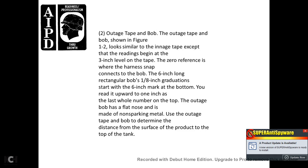11. Outage tape and bob. The outage tape and bob, shown in Figure 1-2, looks similar to the ingage tape except readings begin at three inches on the tape. Zero reference is where the harness snap connects to the bottom of the six-inch-long rectangular bob, with one-eighth-inch graduations starting at the six-inch mark at the bottom reading upward. The outage bob has a flat nose and is made of non-sparking metal. Use the outage tape and bob to determine the distance from the surface of the product to the top of the tank.